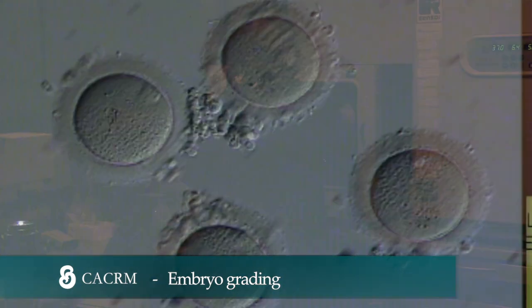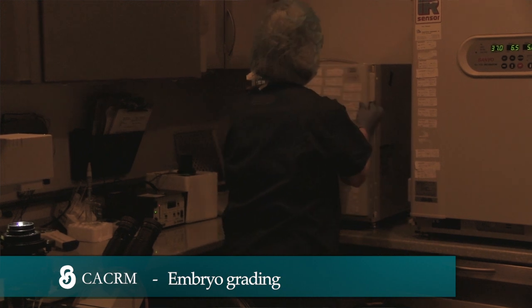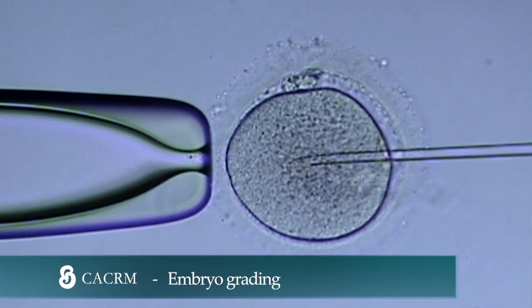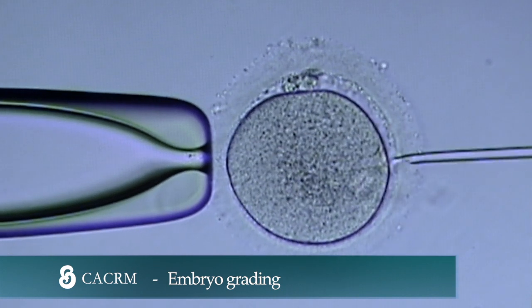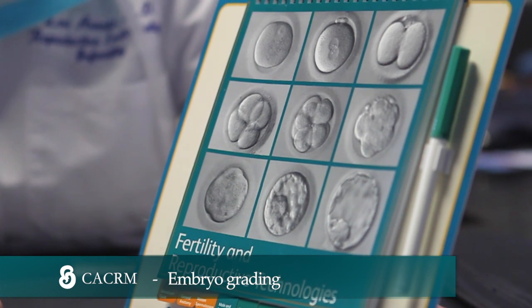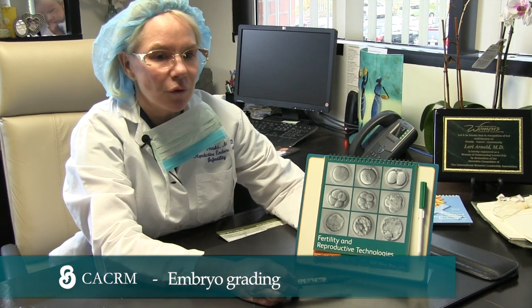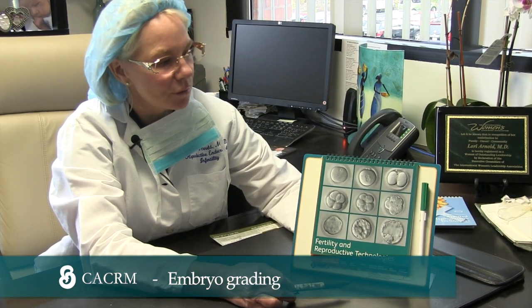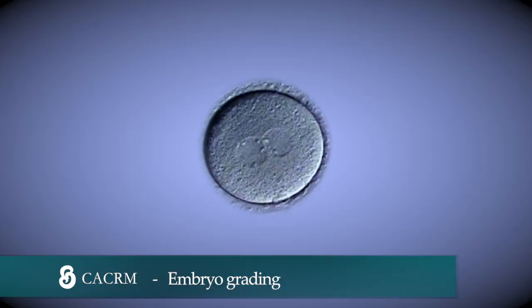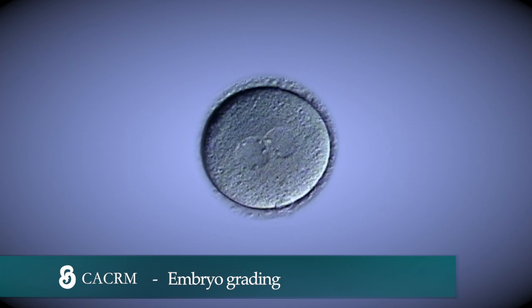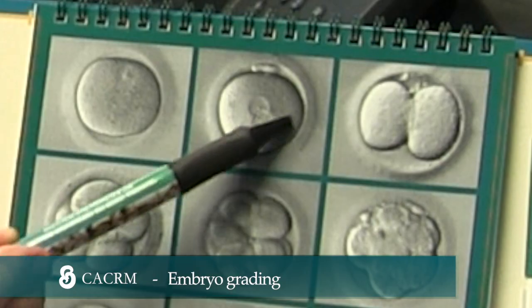The eggs are then incubated for four to six hours before the process of ICSI is done. The process of ICSI is selecting one sperm to inject into one egg for the process of fertilization. The fertilization process can be evaluated approximately 24 hours after the ICSI procedure. At this time we see a nucleus of the genetic material from the egg and the nucleus from the genetic material of the sperm. This is called the pronuclei stage.